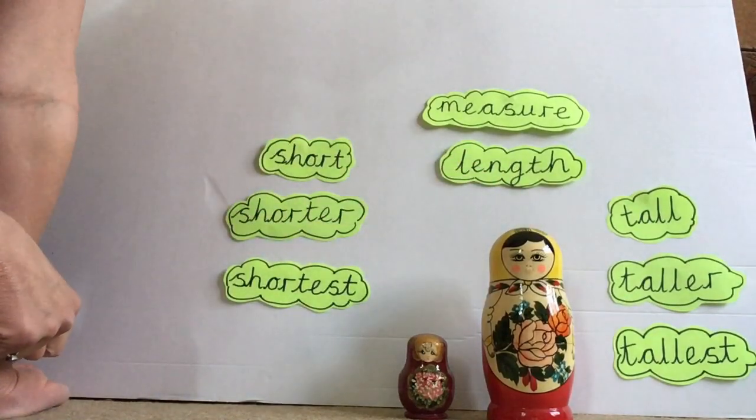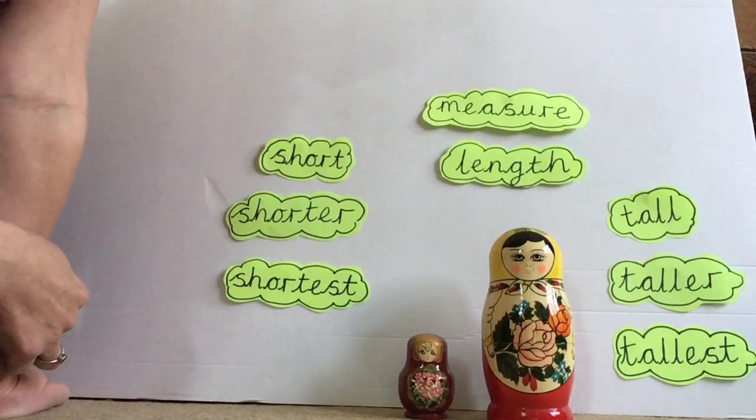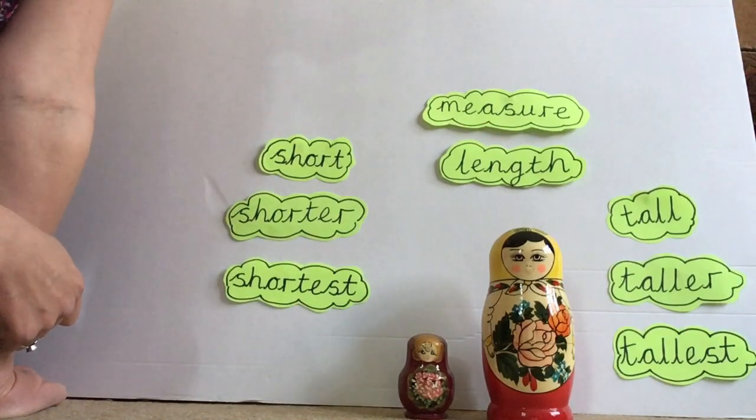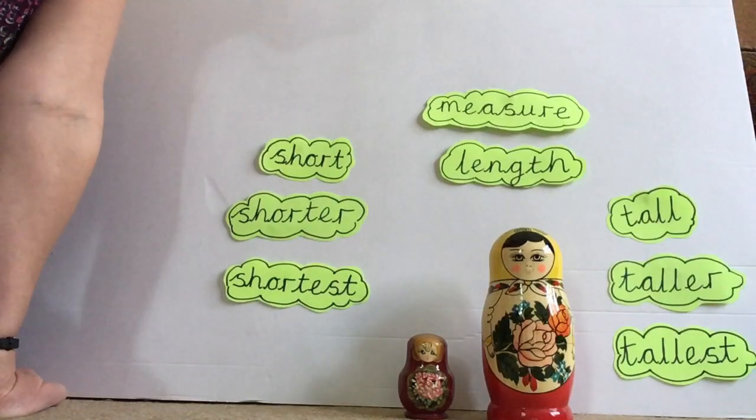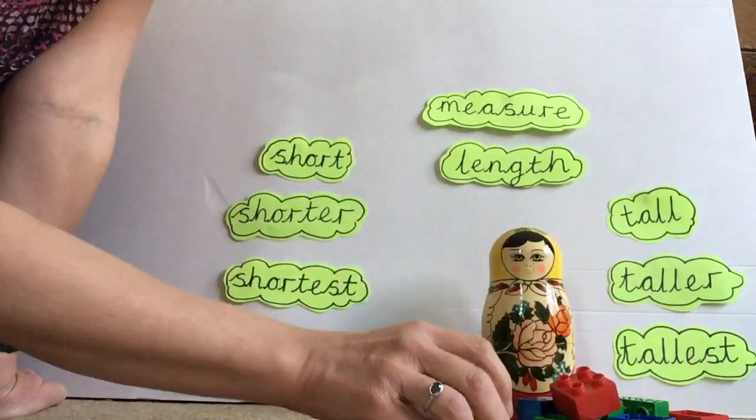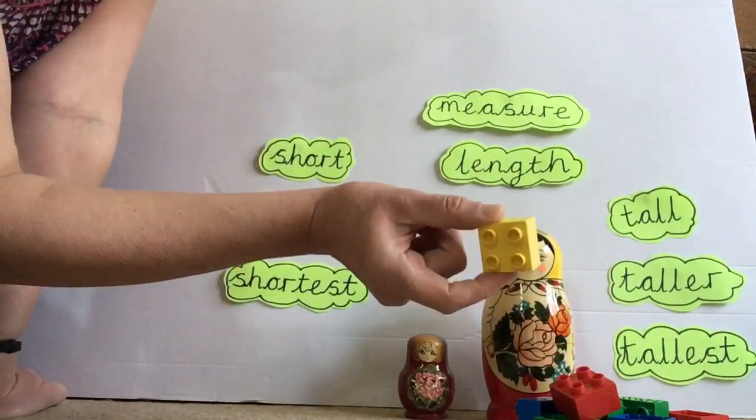And we could say that this Russian doll is taller than the other Russian doll. And this Russian doll is shorter than this Russian doll. Now I want to actually measure these Russian dolls and see how tall they are. And I'm not going to use a ruler. I'm going to use some bricks to measure how tall they are. Now if you're using bricks, it's a good idea to sort your bricks out first. You want bricks that are all the same shape.